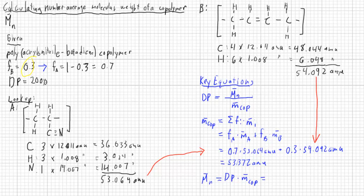DP is 2,000. Copolymer is here, so we take 2,000.